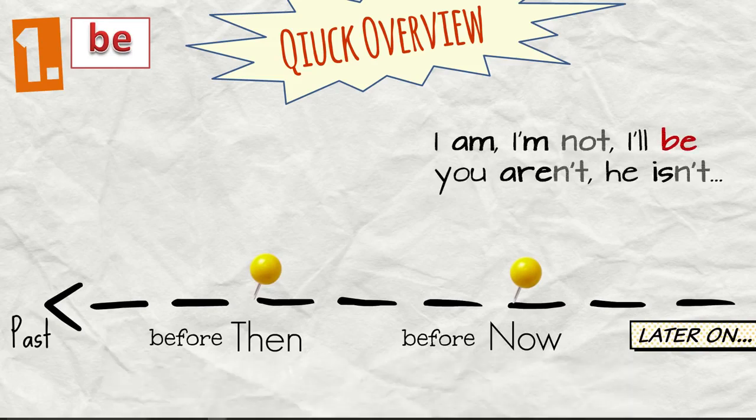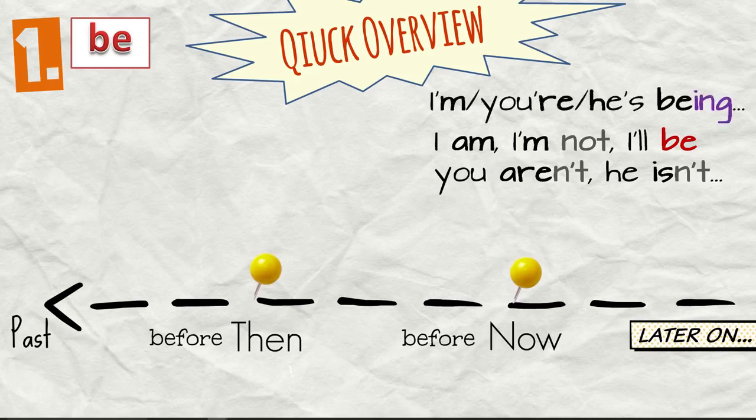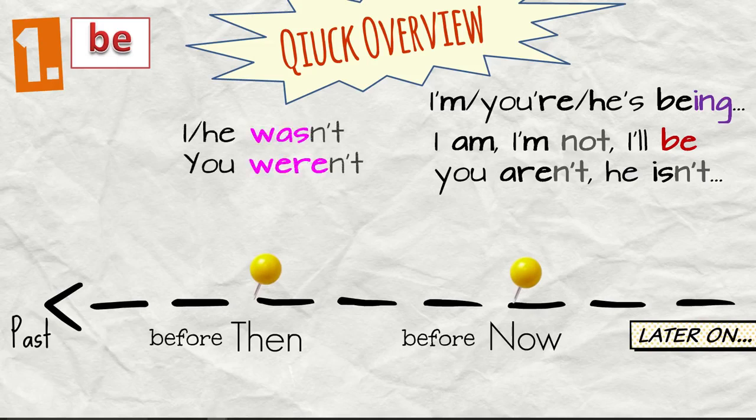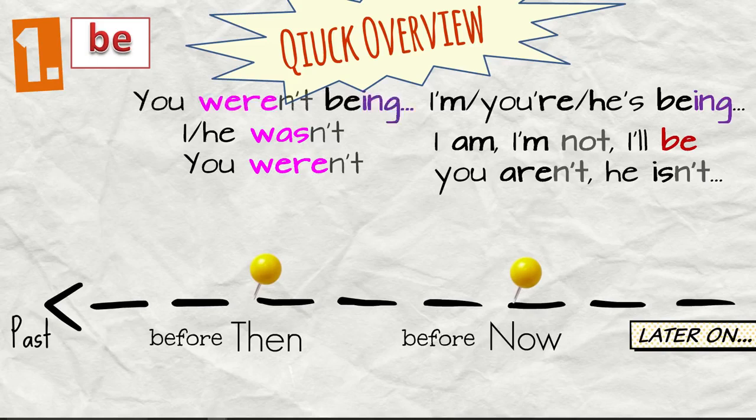Alright, so it's I am, you are, he is. Okay, then we say I'm being or you're being, he's being. In the past it's I was or I wasn't, he was, he wasn't, you were, you weren't. We can say you were being or you weren't being.